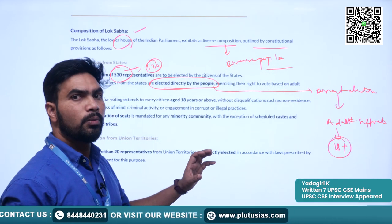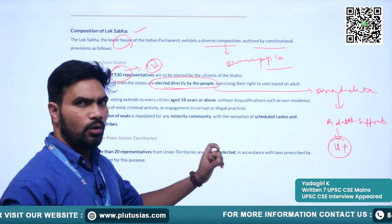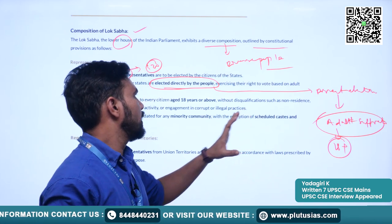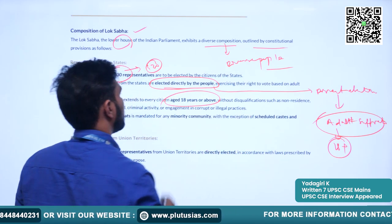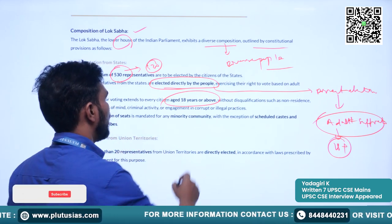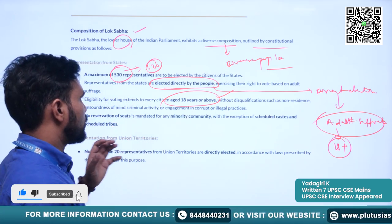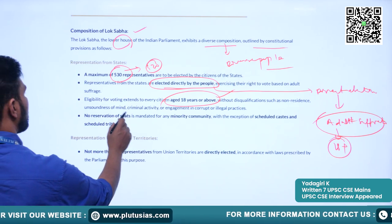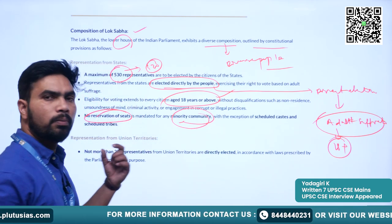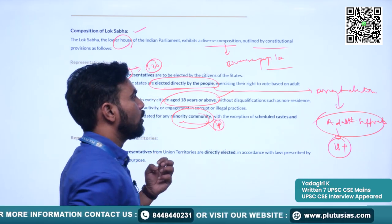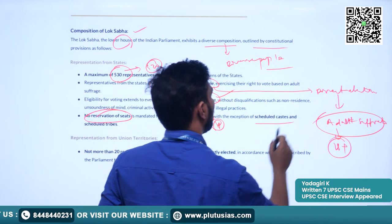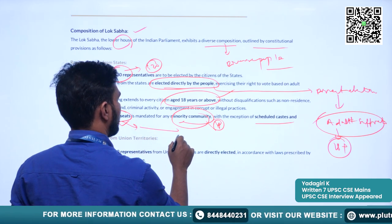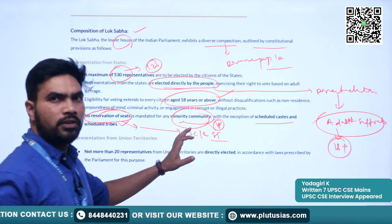Adults aged 18 years or above are eligible to vote and elect the members of the Lok Sabha through the system of adult suffrage. The only criterion is that the voter must be Indian and aged 18 years or above. No reservation of seats is mandated for any minority community. Please try to remember this point — the only exception is that Scheduled Castes and Scheduled Tribes are given representation according to the proportion of their population.